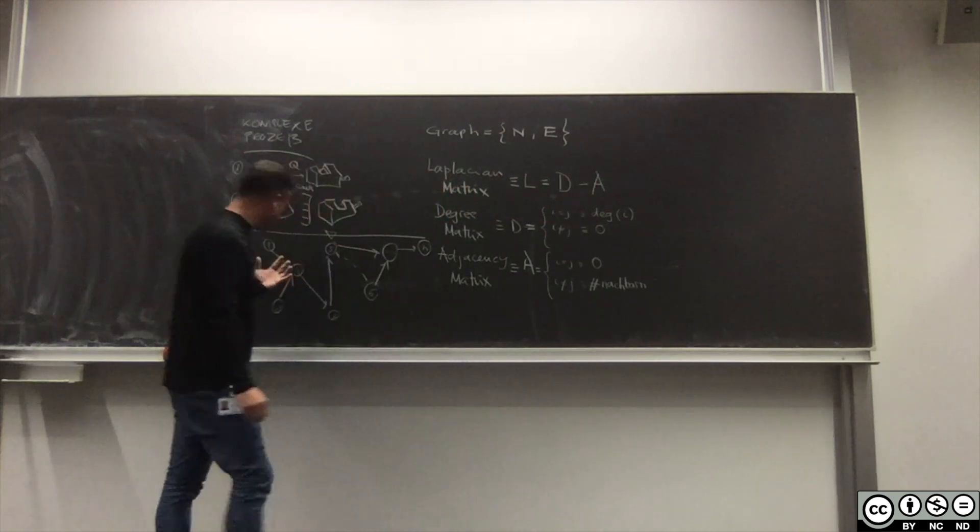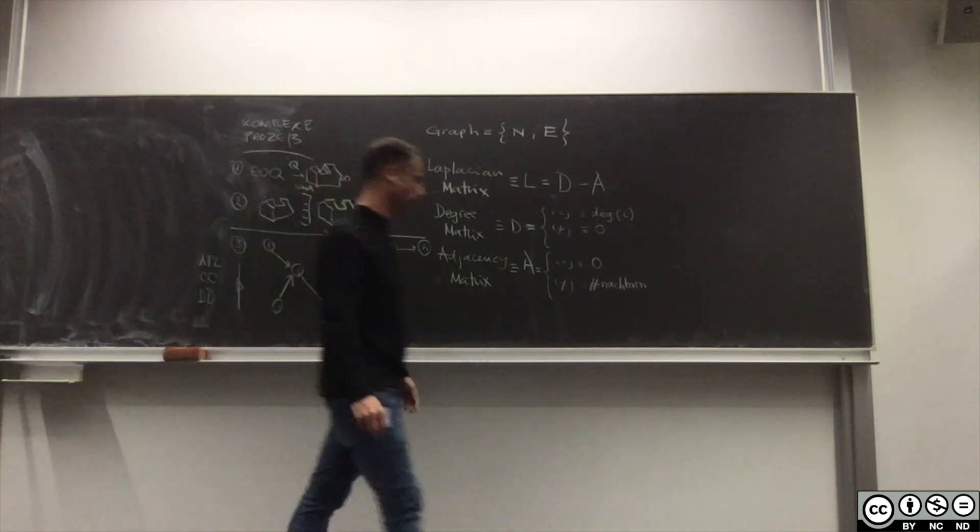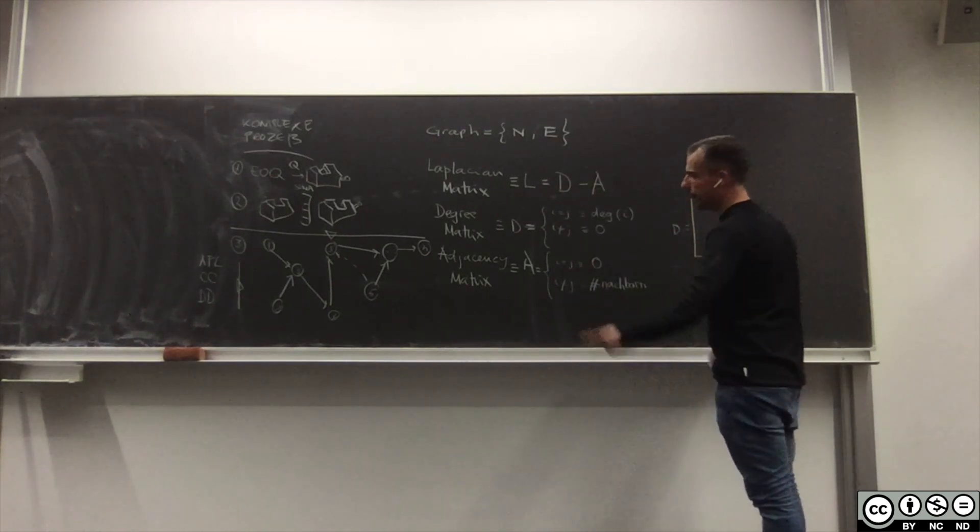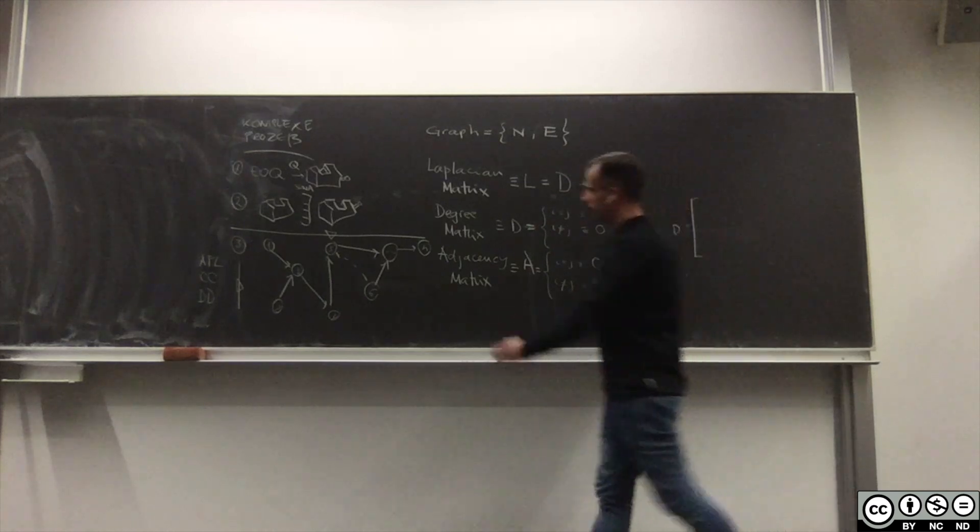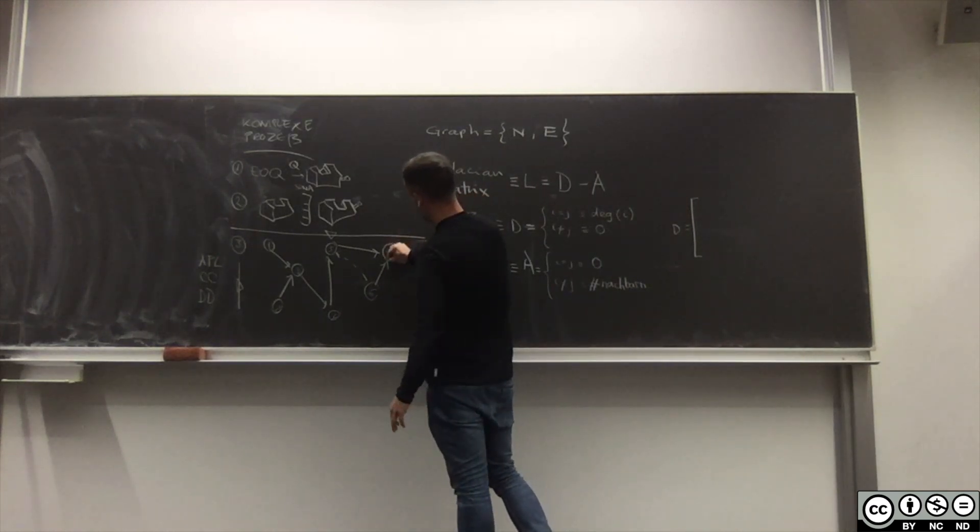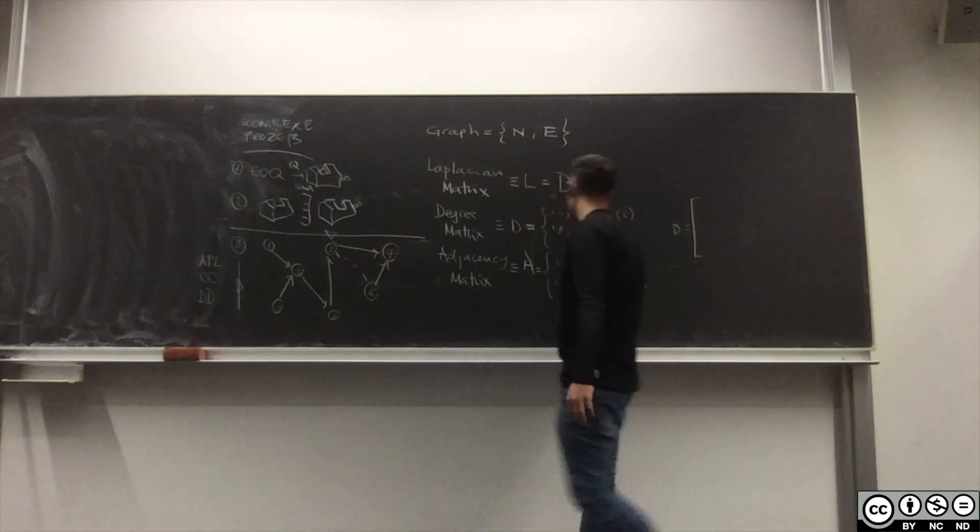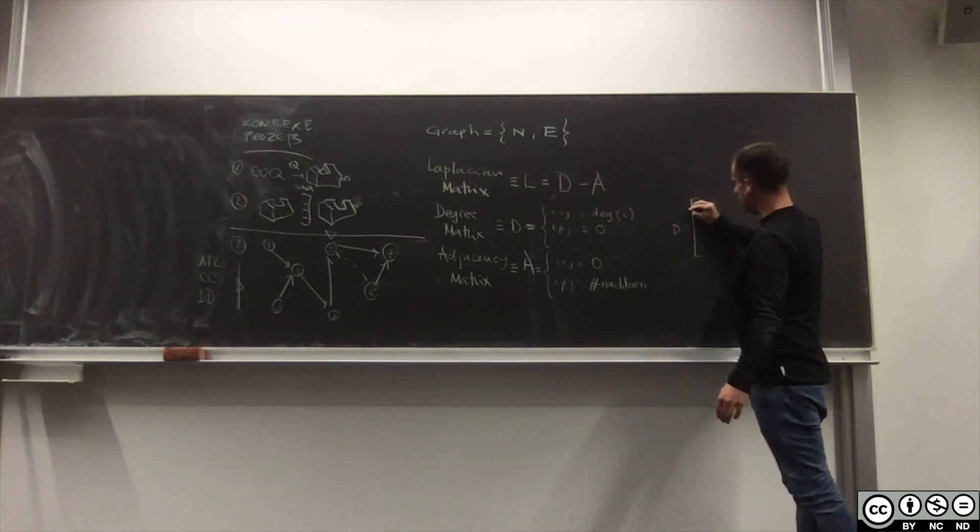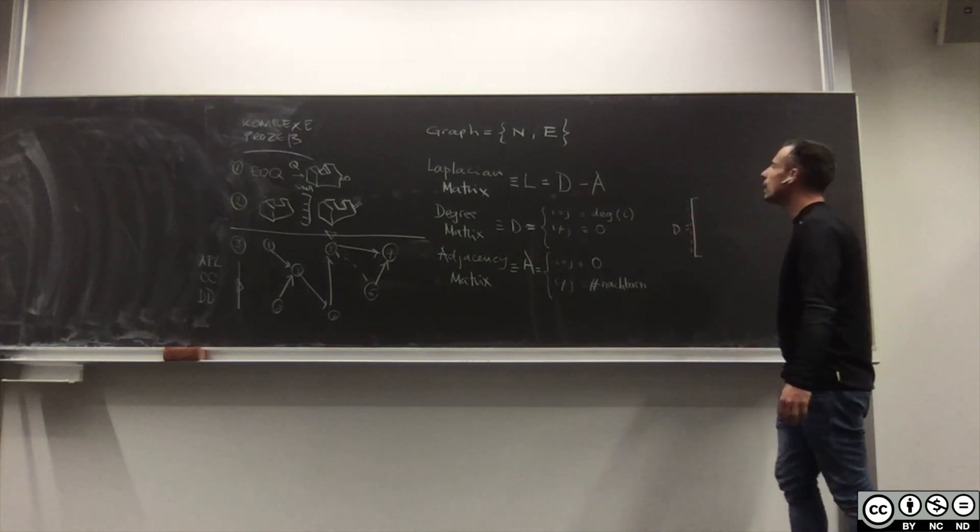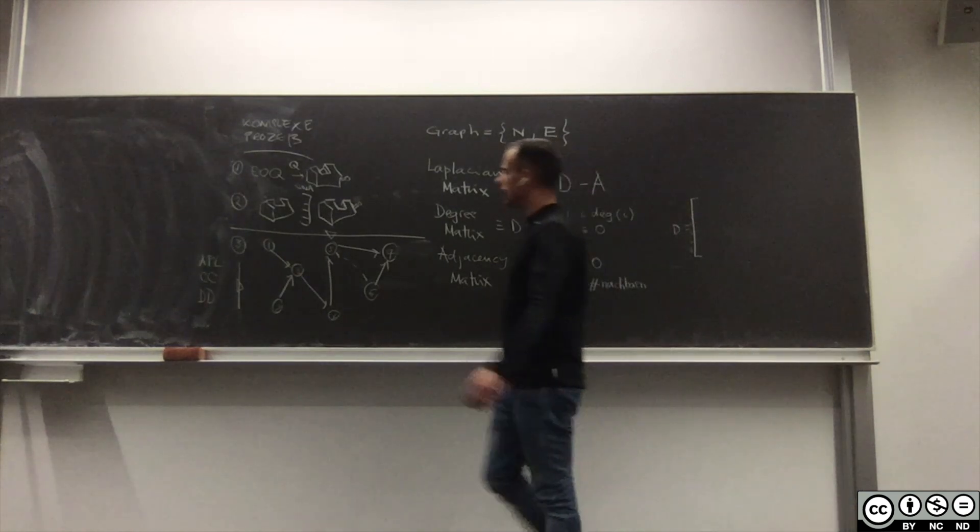Beispiel an diesem Netzwerk. Was ist D? Ich habe, wenn wir jetzt diesen N wegnehmen und machen wir hier ein 7, ich habe hier 7 Elemente 1 2 3 4 5 6 und 7.